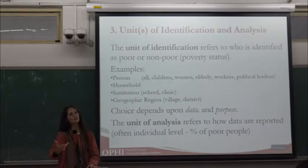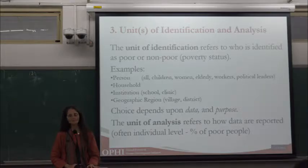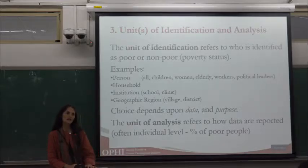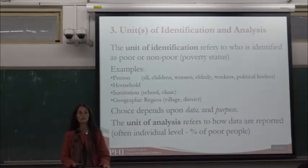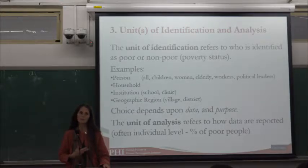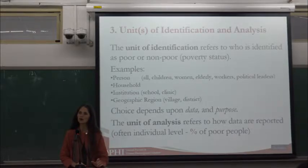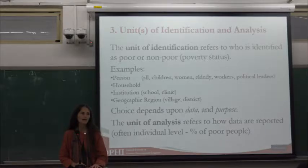Even if you use the household as the unit of identification, as in the global MPI, you may use the person as the unit of analysis — reporting the head count ratio as the percentage of people rather than households. We have a strong preference for using the person as the unit of analysis, reporting the head count ratio in terms of population. The reason is that poor people often live in larger households, so using the household may underestimate poverty.